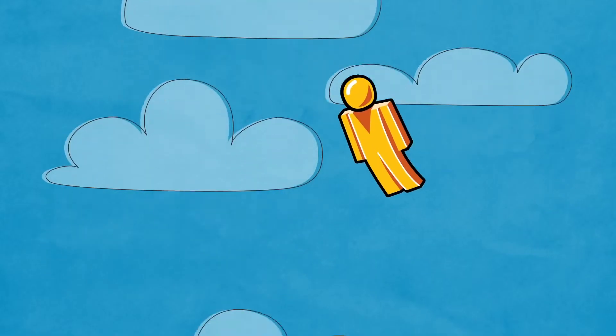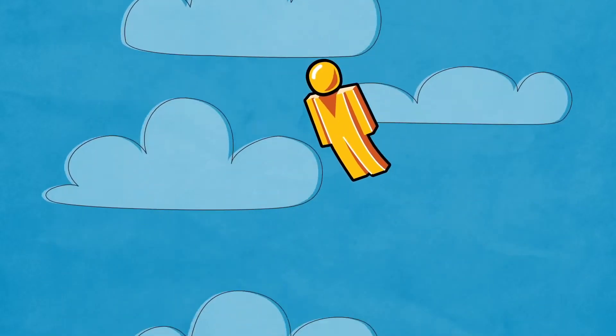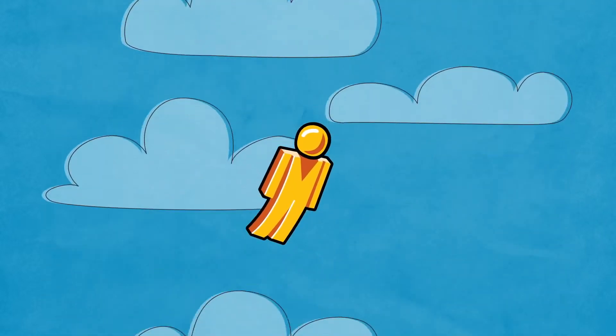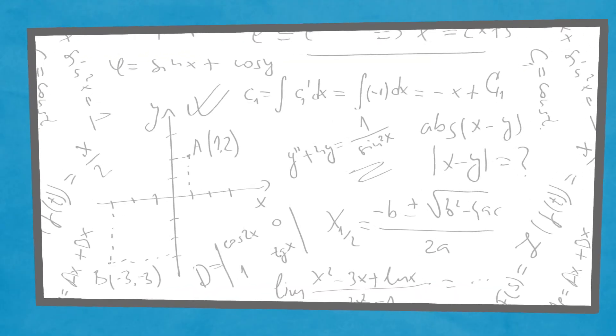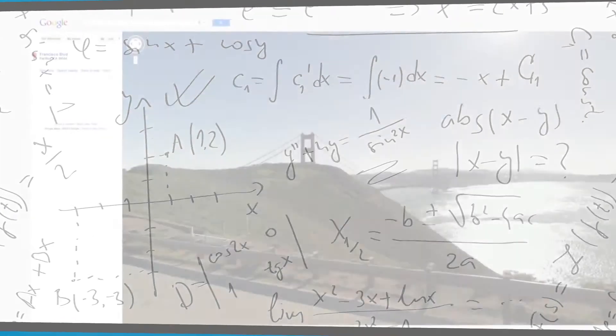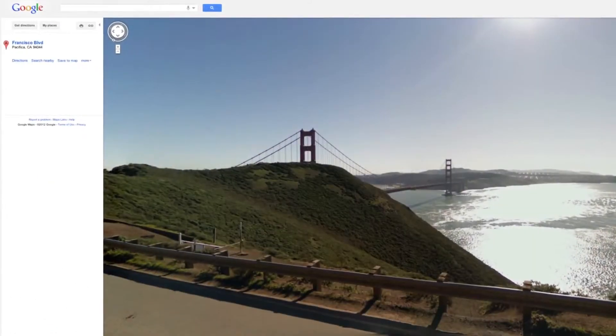We've worked really hard to make Pegman smarter — when he's dropping from the sky, we want him to land somewhere interesting. Thinking computationally is a lot more like art than it is like math class. You go in knowing you want to create something, you have a blank canvas, and you use math and these tools to paint on that canvas. And you end up creating something beautiful.